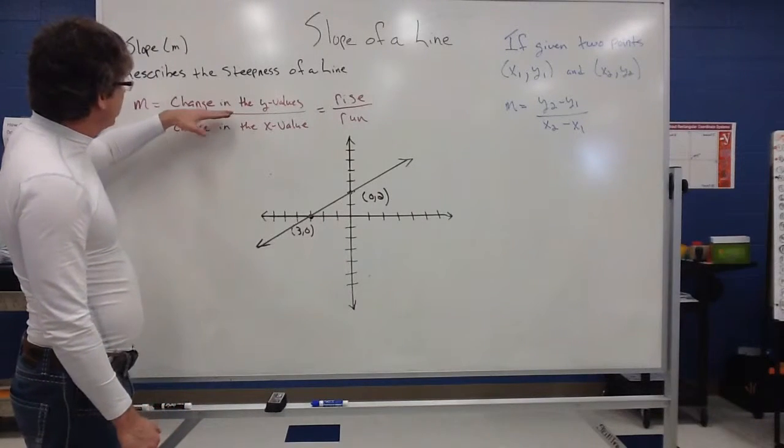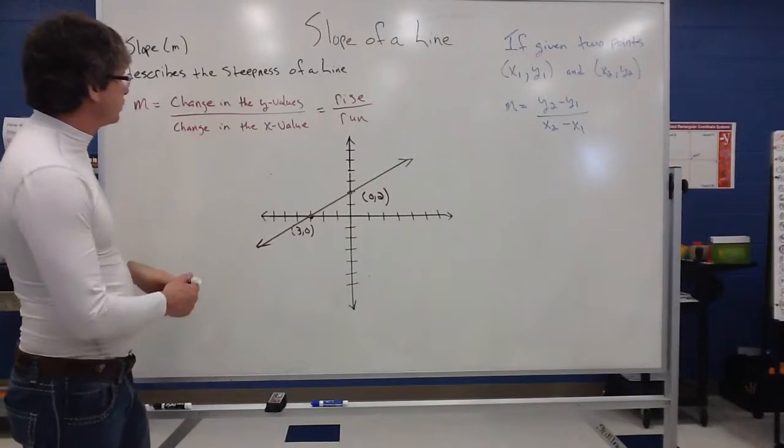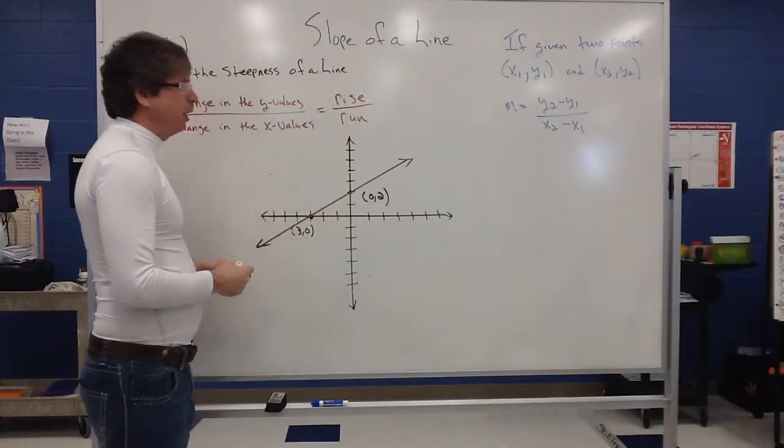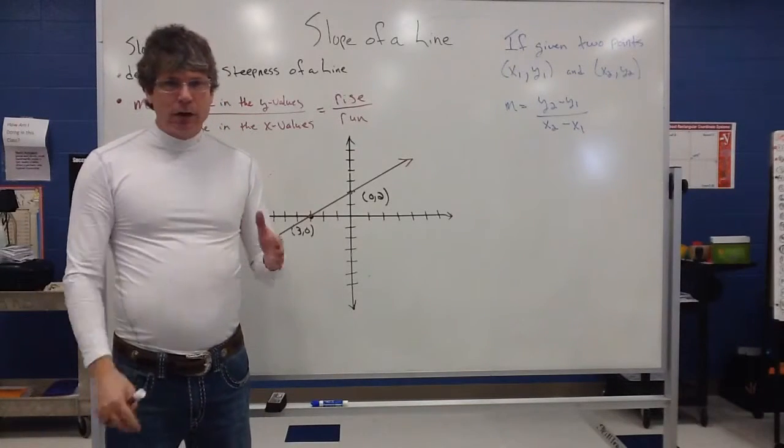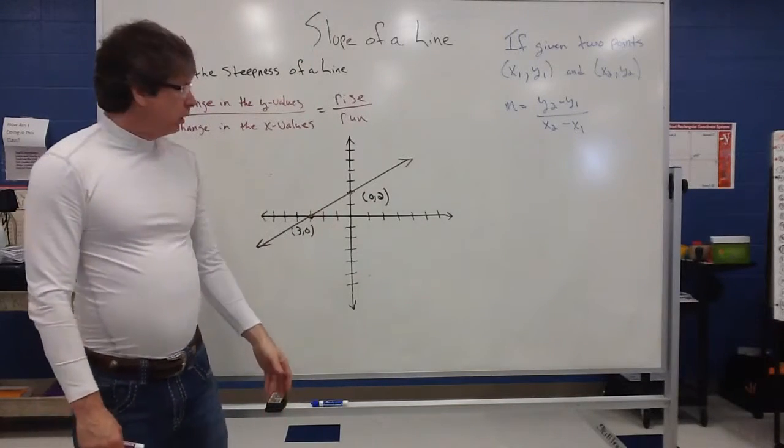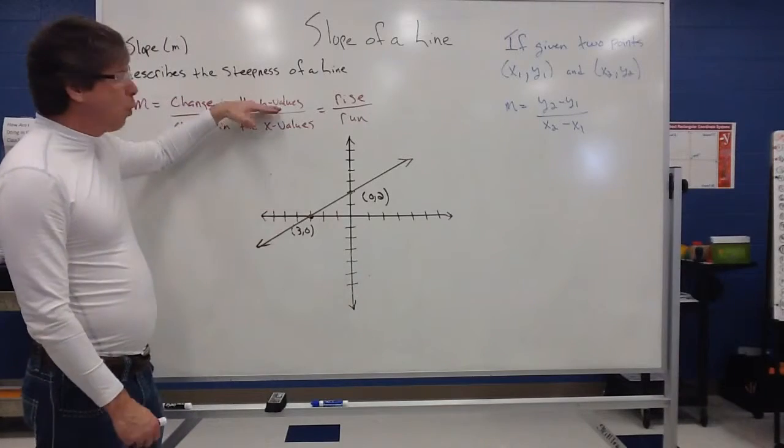So, slope is going to be what we call the change in y values over the change in x values. Sometimes it's denoted as rise over run. Because, again, rise, just like the sun does, the sun kind of goes up and then it kind of goes down. So, the rise kind of implies the y direction.